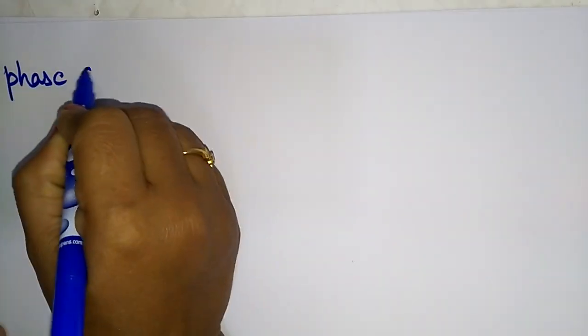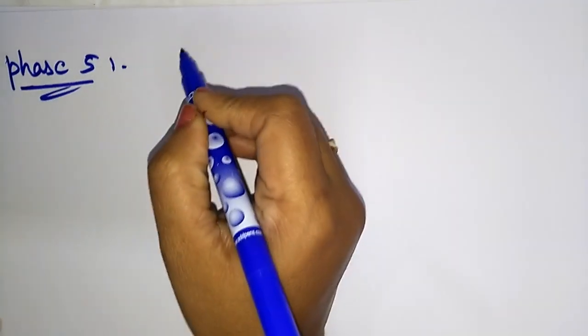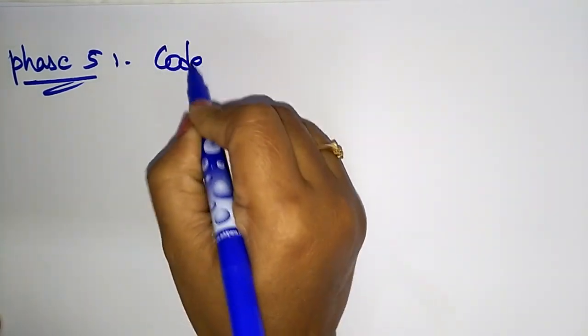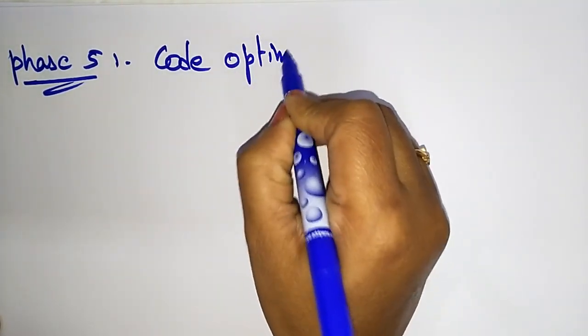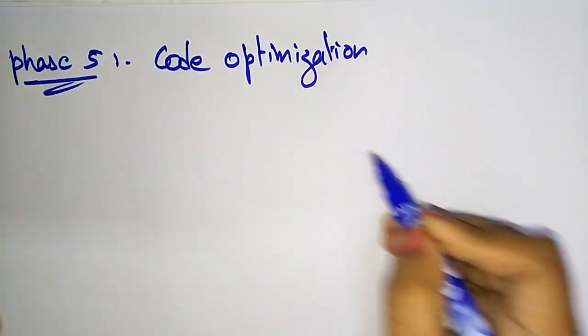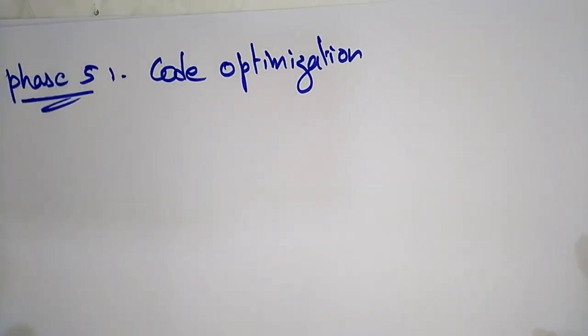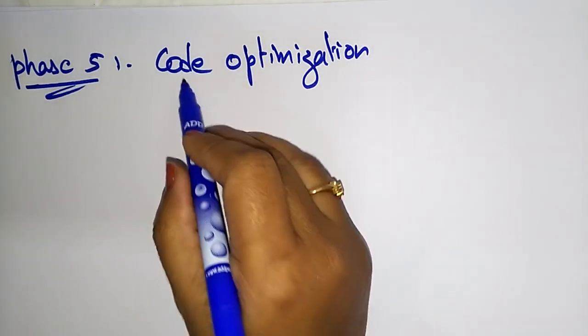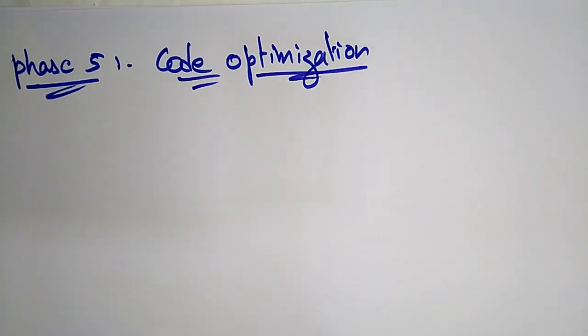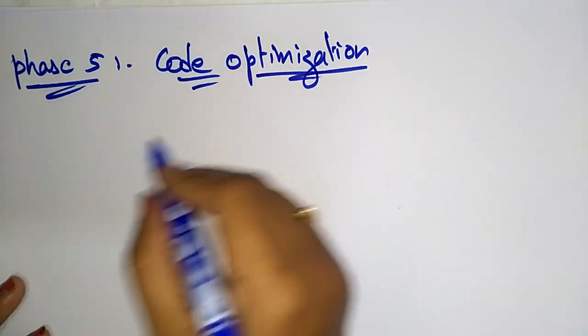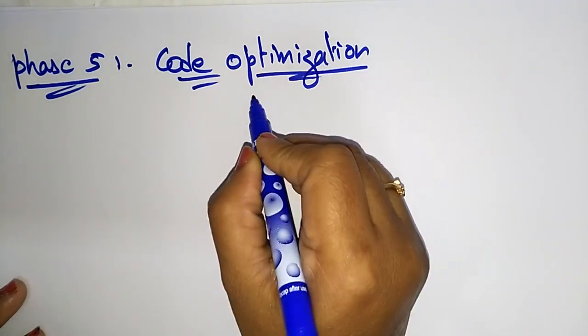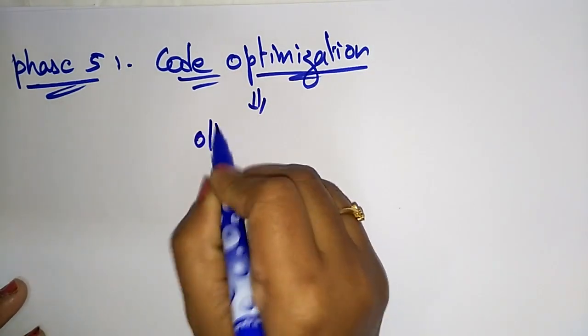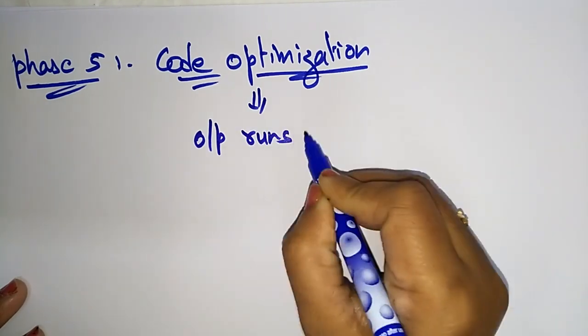Now let's see phase 5: code optimization. This is an optional phase describing how to improve the intermediate code. It improves the intermediate code so that the output runs faster and takes less space.